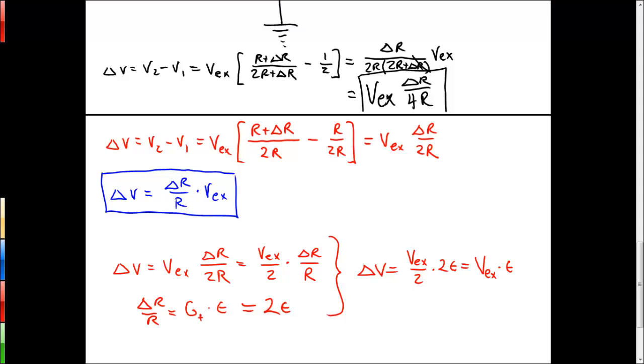If our excitation voltage, let's say, is 4 volts, which is a typical voltage, and our strain is maybe 1%, which might be a typical strain that we're interested in, or it might be a typical strain for the system that we're interested in, then we can see that our change in voltage in this case is going to be equal to 40 millivolts.